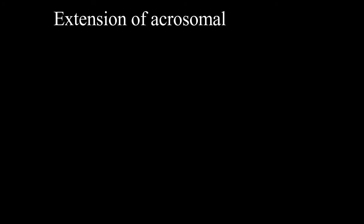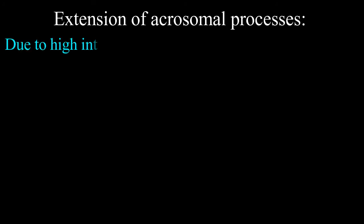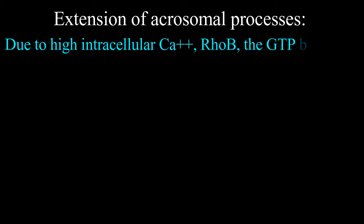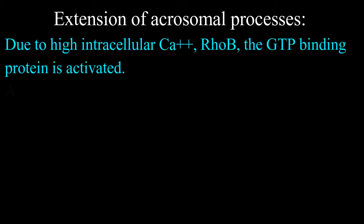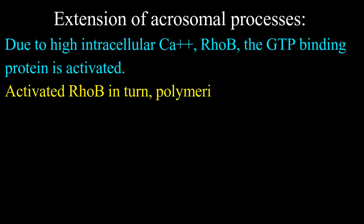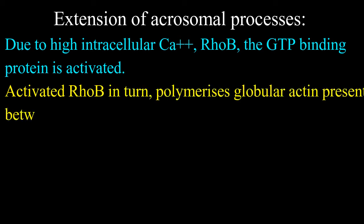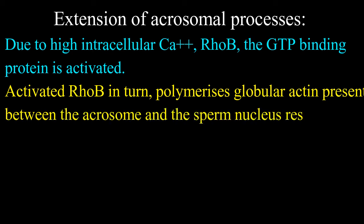Second, extension of acrosomal processes. Due to high intracellular calcium ions, Rho B, which is the GTP binding protein, is activated. The activated Rho B in turn polymerizes globular actin present between the acrosome and the sperm nucleus.